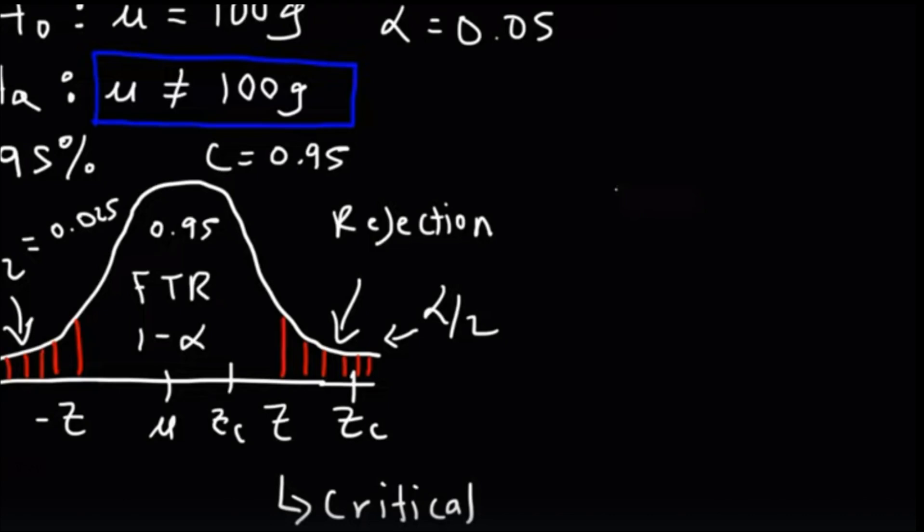In order to determine whether to reject or not reject the null hypothesis, calculate the Z value and compare it to the critical value associated with the test statistic.